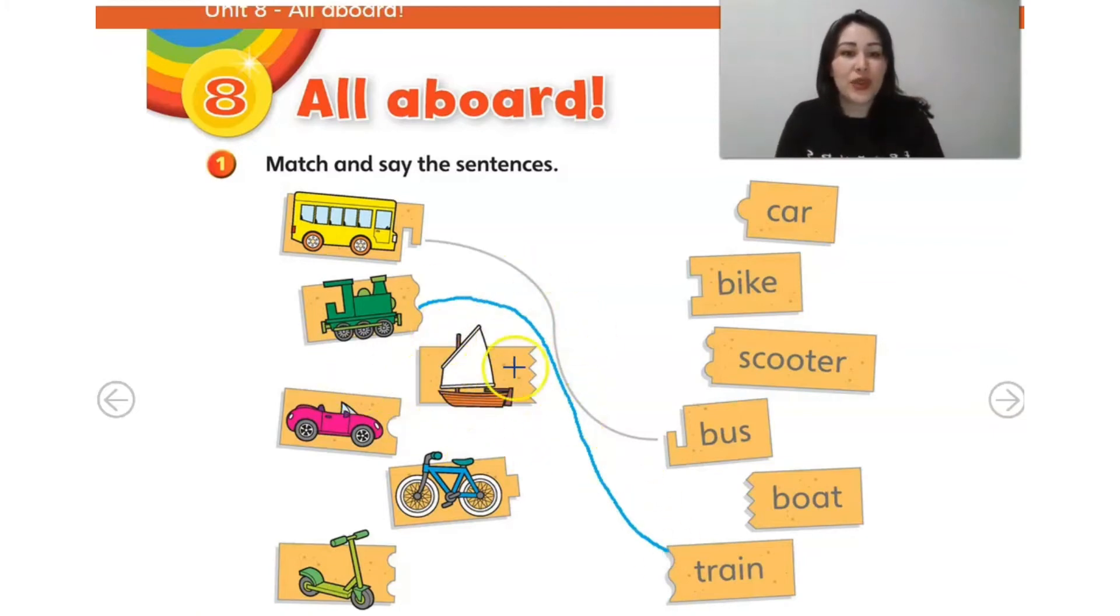What about this transport? What is it? Look at the shape. Where is the other part? We have it here. So, here we have a boat.